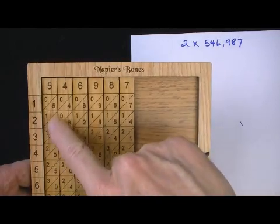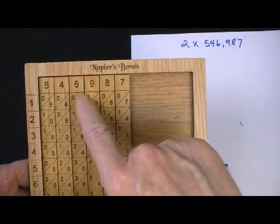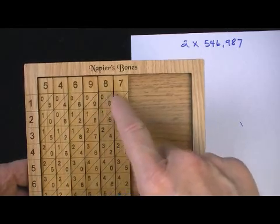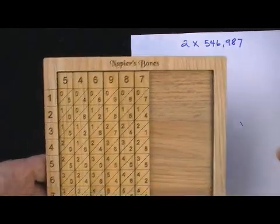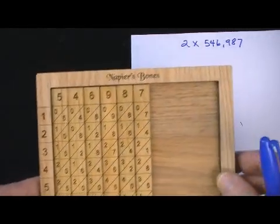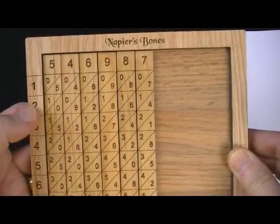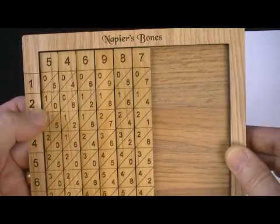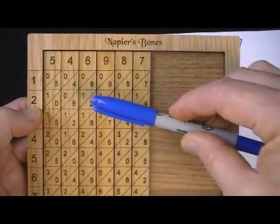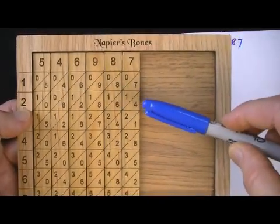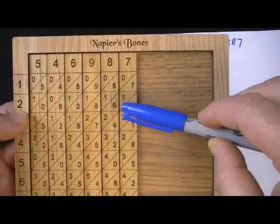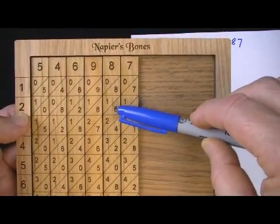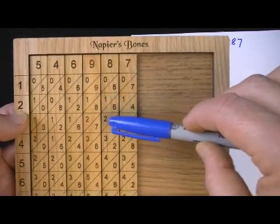I have taken the rods, as you can see here, 546,987, and lined them up. And to complete this calculation, since I want to multiply it by 2, I'm going to go to the 2 row. And so I'm going to be using this row across here. What you do is you start at the right. And you're going to look at the numbers within these kind of parallelogram boxes.